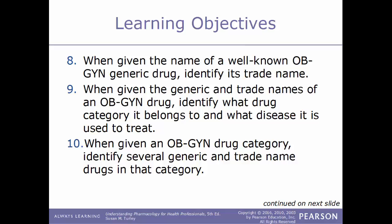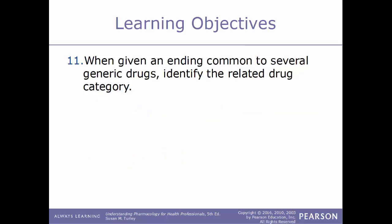Additional objectives include: describing drugs used to treat endometriosis, dysmenorrhea, and abnormal menstruation; describing the various types of drugs used to treat vaginal infections and sexually transmitted diseases; discussing drugs used to treat menopause and the risks of hormone replacement therapy; and identifying trade names, drug categories, and drug endings for common OBGYN drugs.